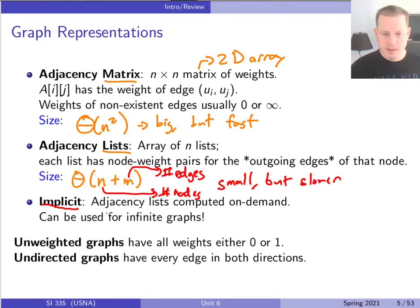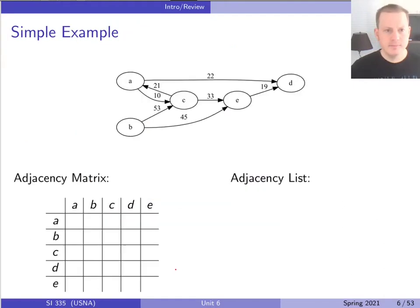And then our graphs can be weighted or unweighted. So do the edges have weights or not? And they can be directed or undirected. Another way of saying that is that an undirected graph is just every edge goes in both directions. So we can really use these, even though these are kind of assuming we have a weighted and directed graph, we can also use them to store unweighted graphs where our edge weights are zero or one. And we can also use them for undirected graphs where edges go in both directions.